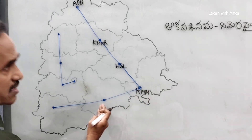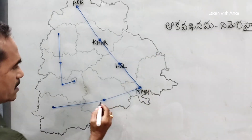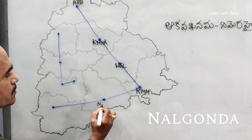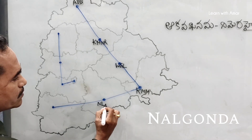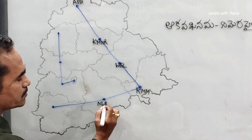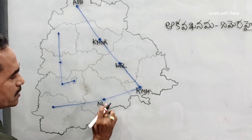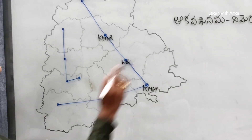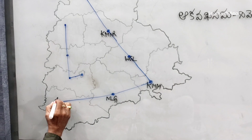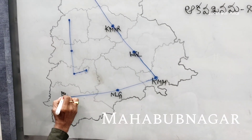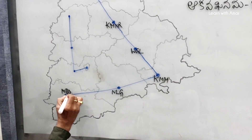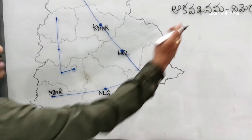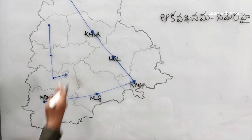Now move on to this direction. Next comes Na for Nalagonda, then Ma for Mahabubnagar. We have now covered 6 original districts in the first direction.